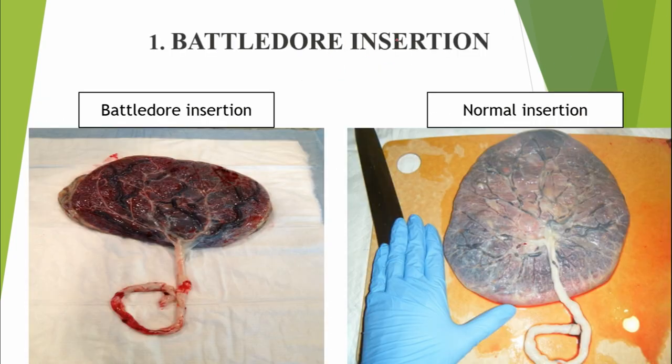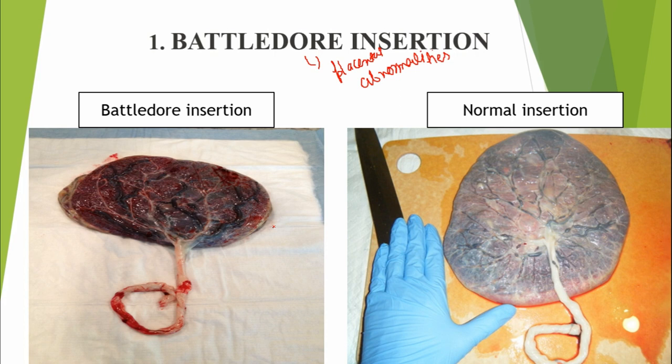The first abnormality is battledore insertion. We have also seen battledore insertion in placental abnormalities. Don't confuse — battledore insertion is a cord abnormality, while battledore placenta is a placental abnormality. It is included in both.